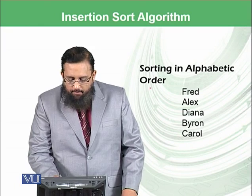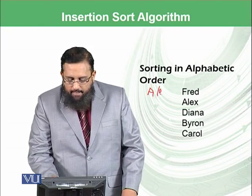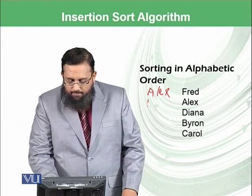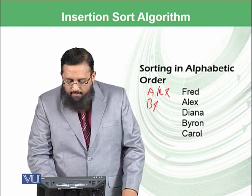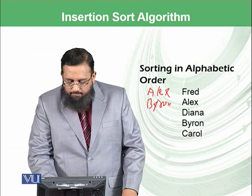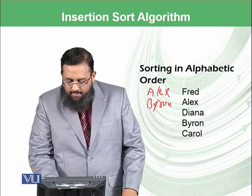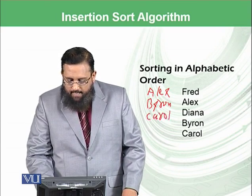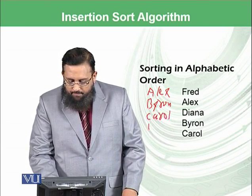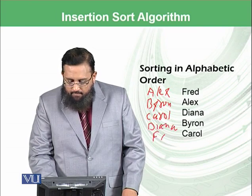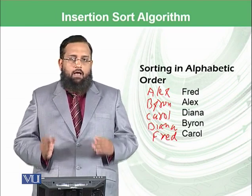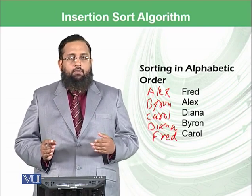Alex should go at the top, then starting from B — Byron — then the C one, Carol, then D — Diana — and then Fred. This should be the final output of your algorithm.